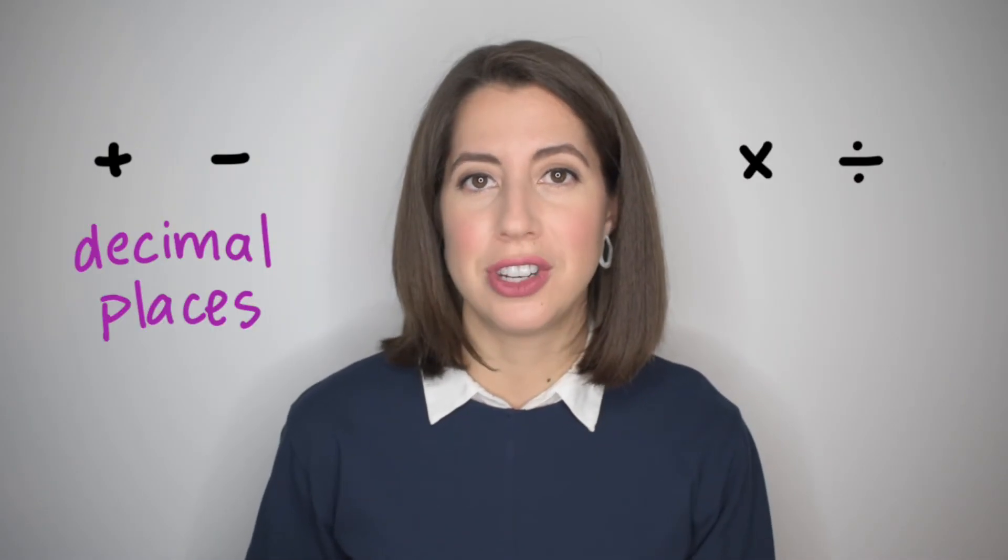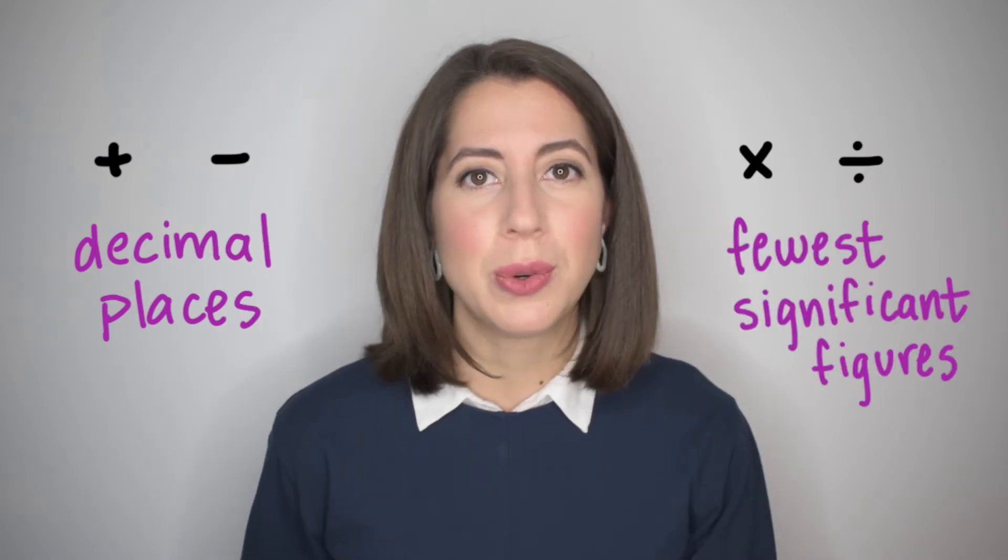So for addition and subtraction, it's all based on decimal places, whereas for multiplication and division, it's based on fewest numbers of significant figures. The rules get a lot easier as you practice. So let's try some examples.